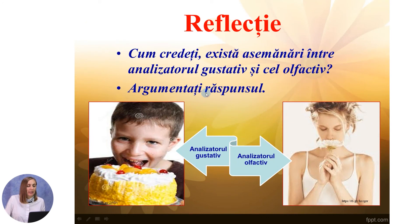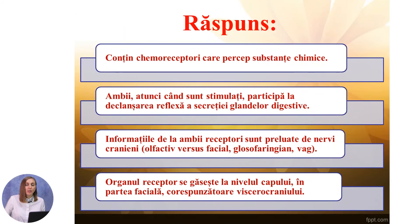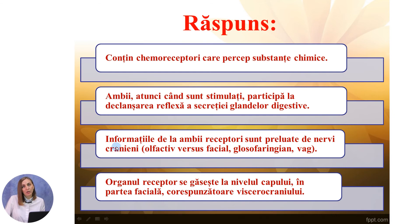Cum credeți? Există oare asemănări între analizatorul gustativ și cel olfactiv? Argumentați răspunsul. Sigur că da. Ambii conțin chemoreceptori care percep substanțele chimice. Ambii, atunci când sunt stimulați, participă la declanșarea reflexă a secreției glandelor digestive. Informațiile de la ambii receptori sunt preluate de nervii cranieni: olfactiv vs. facial, glosofaringian și vag.